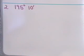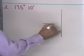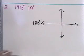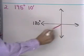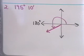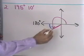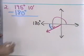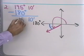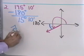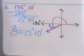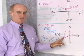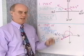Next example: 195 degrees 10 minutes. Drawing a picture — since 180 degrees is here, 195 degrees 10 minutes terminates in quadrant three. The reference angle is the angle between the terminal side and the x-axis. To find it, take 195 degrees 10 minutes and subtract 180 degrees 0 minutes, giving 15 degrees 10 minutes. That is the reference angle for 195 degrees 10 minutes. Again, this diagram is just for reference so I can see the order to subtract.